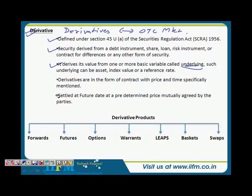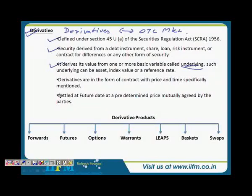The underlying can be anything. In fact, derivatives started from weather derivatives — agricultural commodities — you have derivatives on almost everything. Starting from here, we will study the legal definition which is defined under Section 45 U.A. of the Securities Regulation Act.